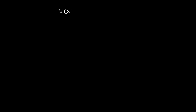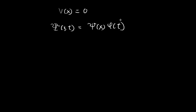Now we're going to look into the wave function of a free particle — that is, a particle within a potential equal to zero everywhere. In order to find the wave function, we're going to use separation of variables. So the wave function is equal to ξ(x) times φ(t), where φ(t) is equal to e to the power of negative i·E·t divided by ħ.